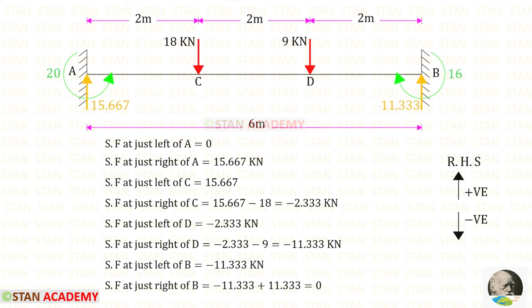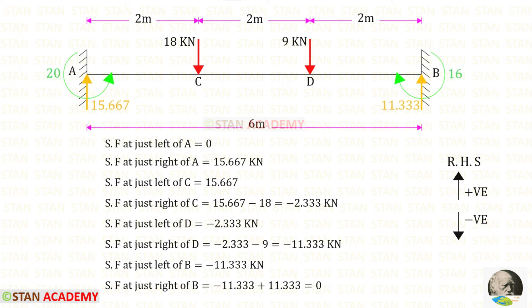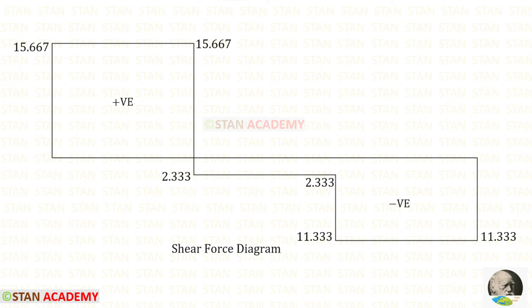Now we are going to draw the shear force diagram. I am going to find the shear force values from point A towards point B, moving towards the right-hand side. Upwards will be positive and downwards will be negative. Using that rule, we can find the shear force values. Here you can see the shear force diagram.